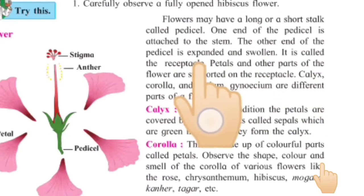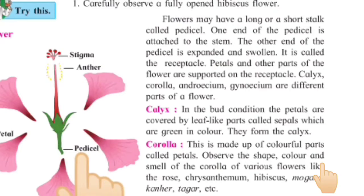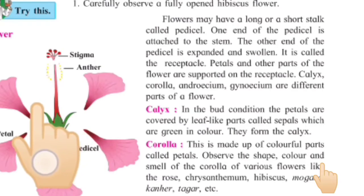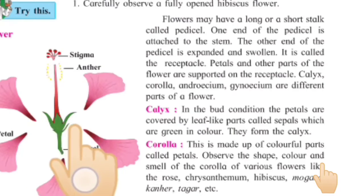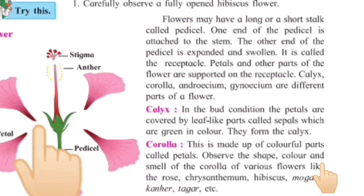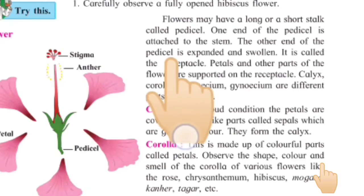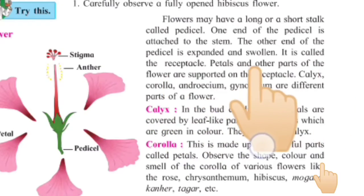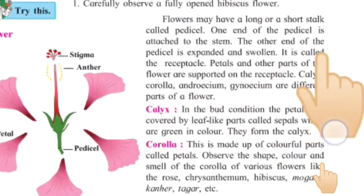The other end of the pedicel is expanded and swollen. Below this pedicel is the stem, and the swollen part is the other end of the pedicel. This other part is called the receptacle.